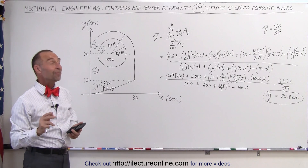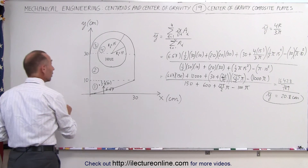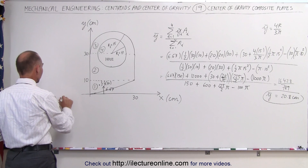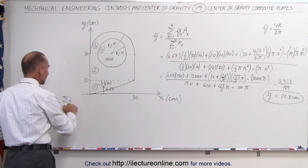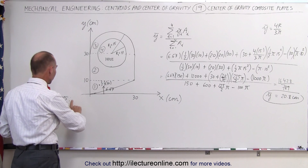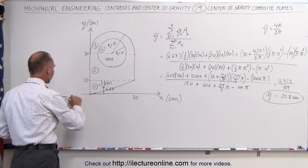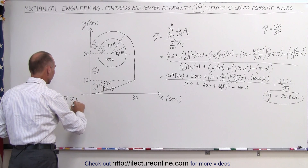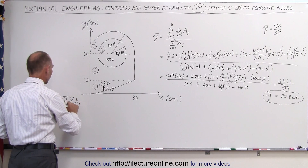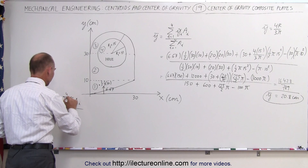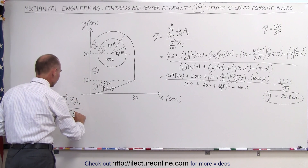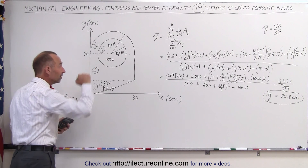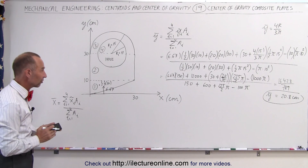Now let's do the same for the x-direction. The x-coordinate of the center of mass is equal to the sum of all the x-coordinates of each individual piece times the area of each individual piece, from i equals 1 to 4, divided by the sum of all the areas from i equals 1 to 4. We need to do exactly the same thing in the x-direction.